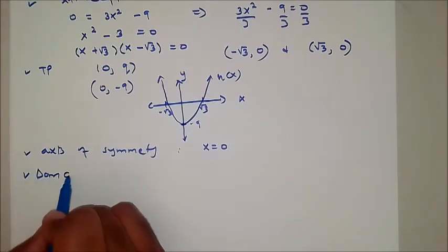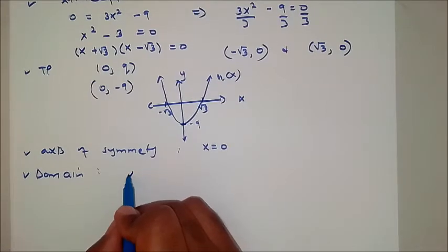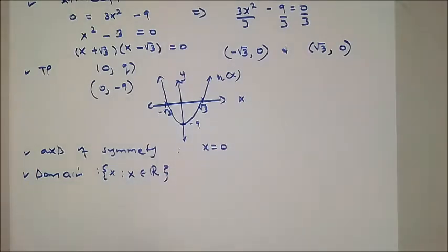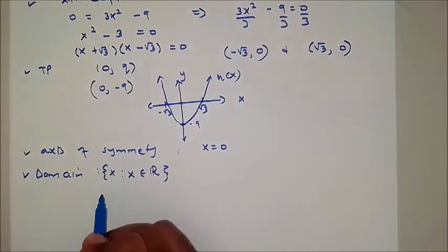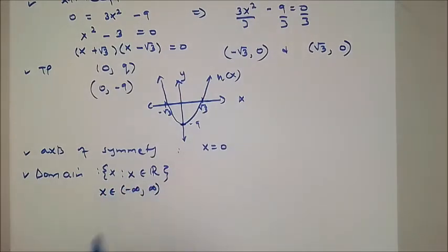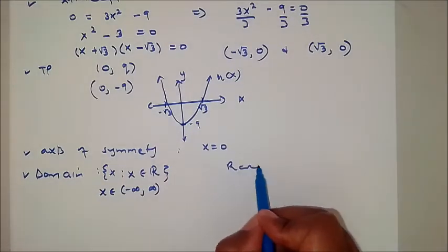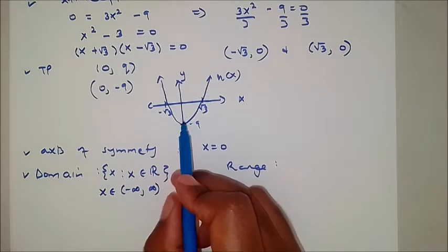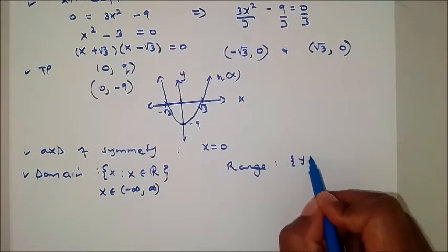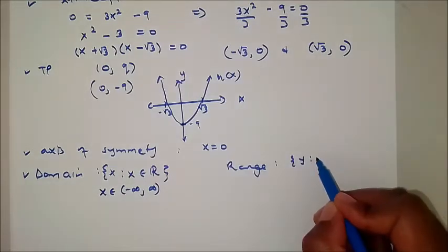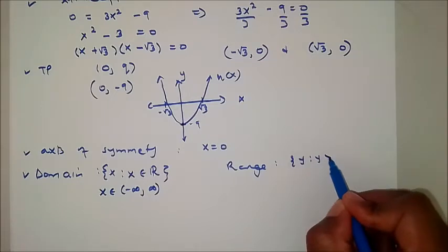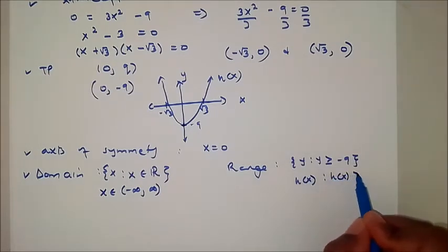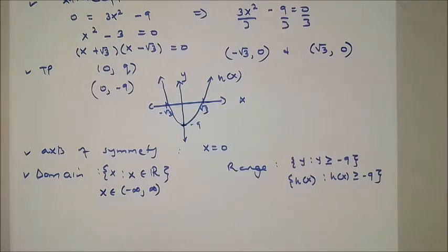The domain of the function is x, which is an element of real numbers, because this graph exists everywhere. You can also write x as an element from negative infinity to infinity. The range: the function exists from q, which is negative 9, upward. So y is greater than or equal to negative 9, or H of x is greater than or equal to negative 9.